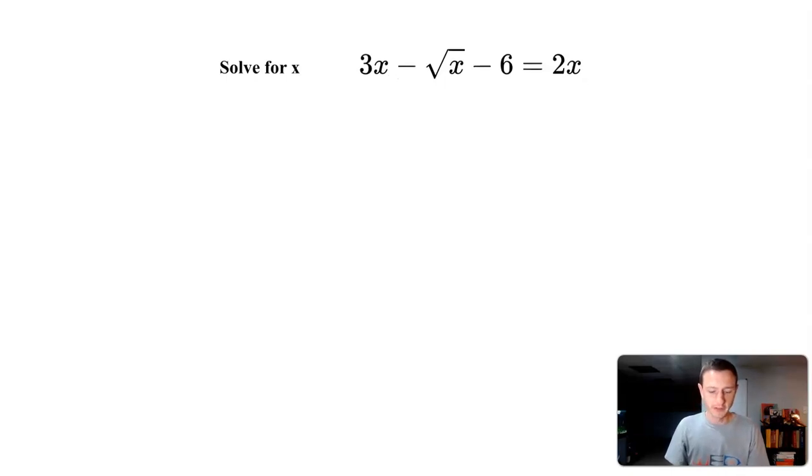In this video I'm going to solve for x. We have 3x minus the square root of x minus 6 equals 2x. Whenever we have this radical it makes things interesting because we have to be careful on how we go about doing this.